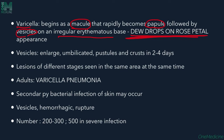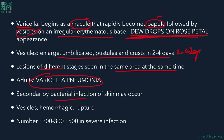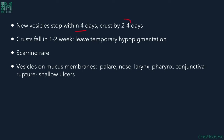Vesicles enlarge and become umbilicated or pustular, crusting within 2–4 days. Lesions of different stages — macule, papule, pustule — are seen in the same area simultaneously. In adults, severe complications like Varicella pneumonia and secondary bacterial infection may occur. Vesicles may be hemorrhagic or may rupture. Normal number of vesicles is 200–300; more than 500 indicates severe infection. New vesicles stop within 4 days and crust by 2–4 days. Crusts fall in 1–2 weeks leaving temporary hypopigmentation; scarring is very rare.